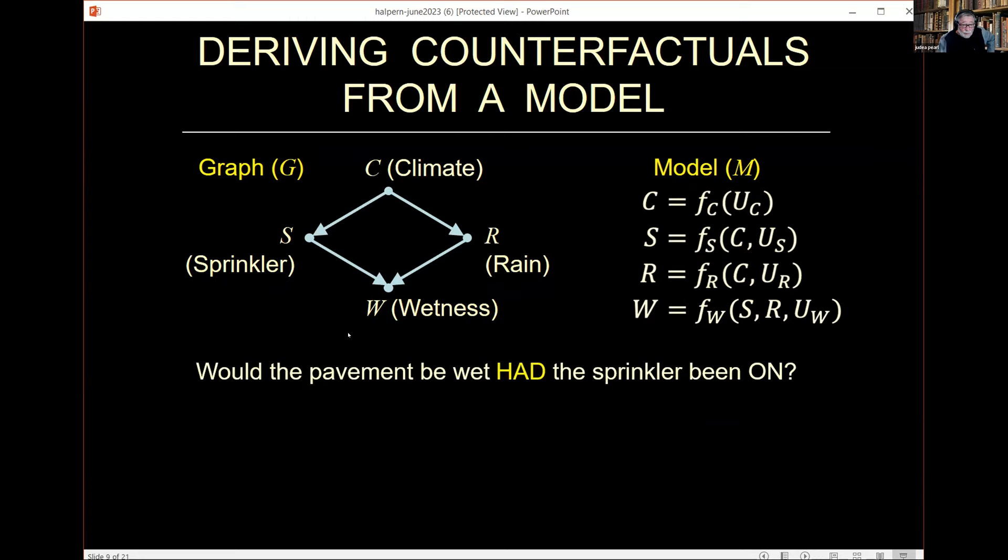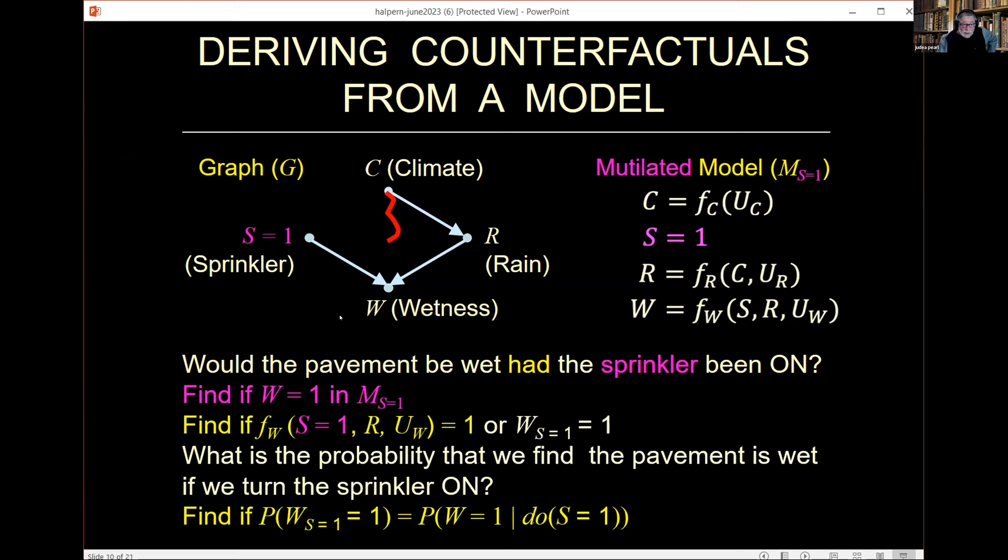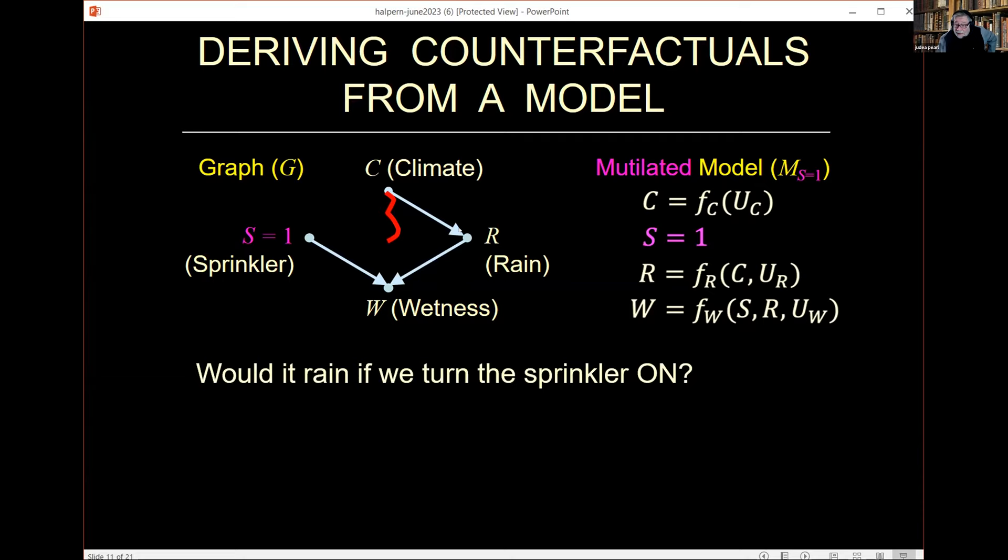Here I demonstrate it with our wetness and our pavement. If you want to find the answer to the question, would the pavement be wet had the sprinkler been on? All you have to do is cut off the line between the equation between the climate and the sprinkler, substitute the value sprinkler is on, S equals one, solve for the equation, and find out what the status of W is.